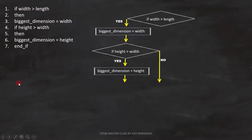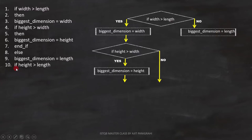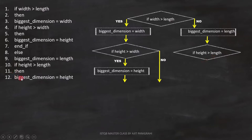Now let's consider line number eight and nine. The else on the eighth line is for the condition on line one, because this if condition is not yet closed. If this condition is false, biggest dimension equals to length. Now let's focus on line number 10: if height is greater than length. This is a condition, so we represent it like this in the flowchart. Now let's see lines 11 and 12: then biggest dimension equals to height. In the flowchart, we represent it like this.